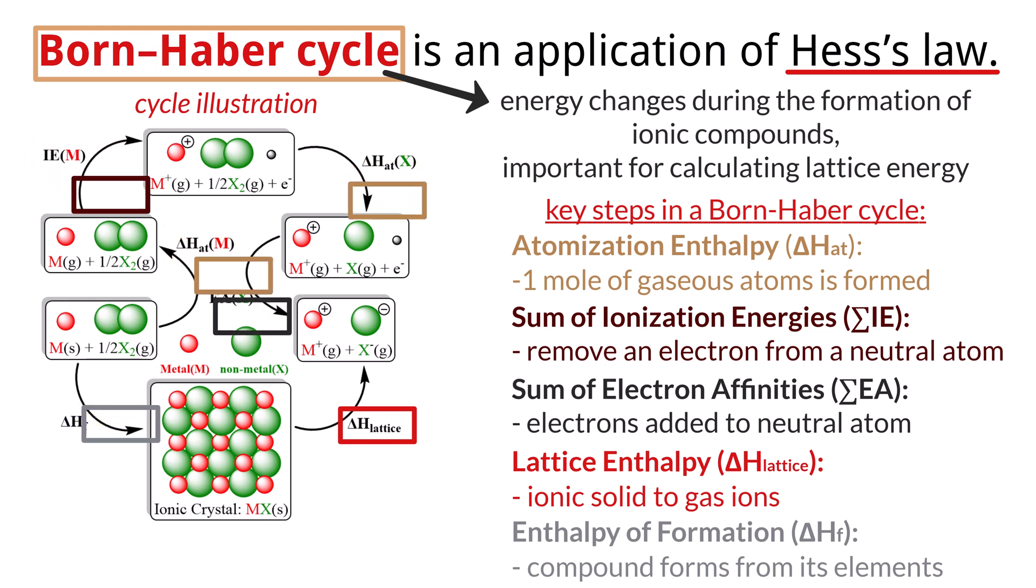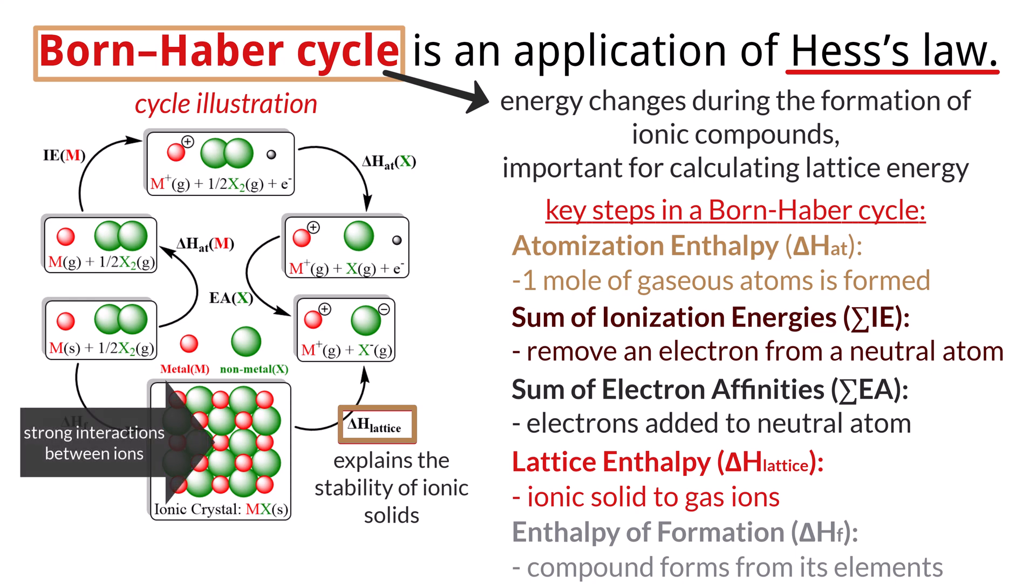The Born-Haber cycle combines these steps to calculate the lattice enthalpy of an ionic compound, providing insights into the stability of the compound. Lattice energy is important because it explains the stability of ionic solids. Despite their ordered structure and low entropy, the crystalline arrangement allows for strong interactions between oppositely charged ions, resulting in favorable enthalpy change and high melting points and boiling points. Some ionic solids decompose before reaching these temperatures, though.